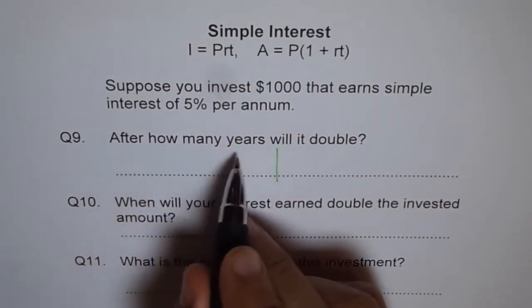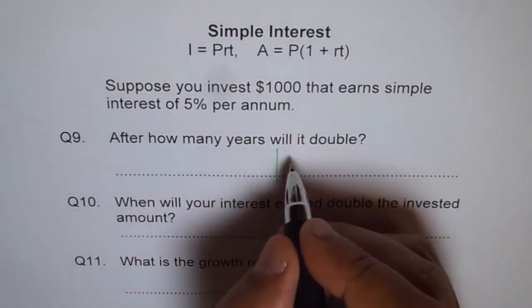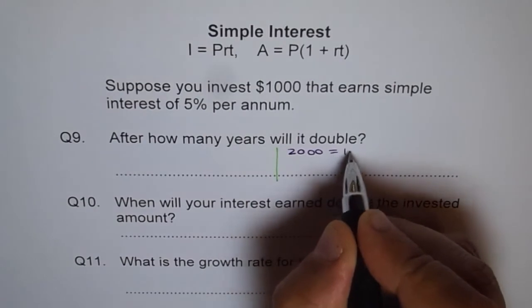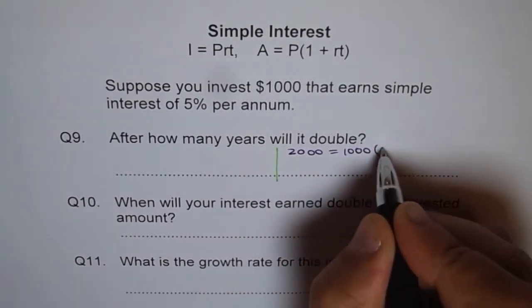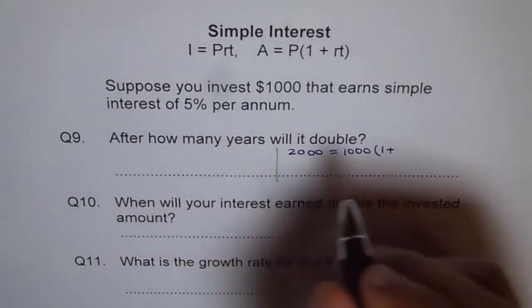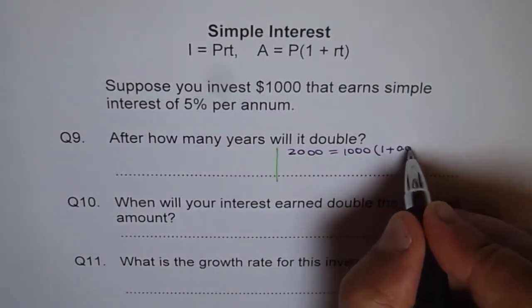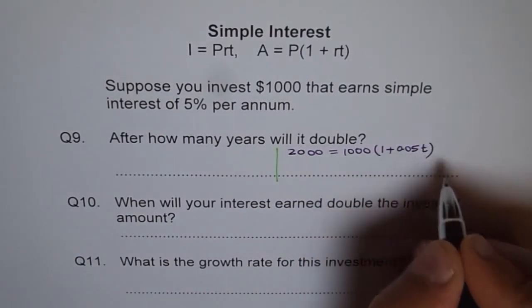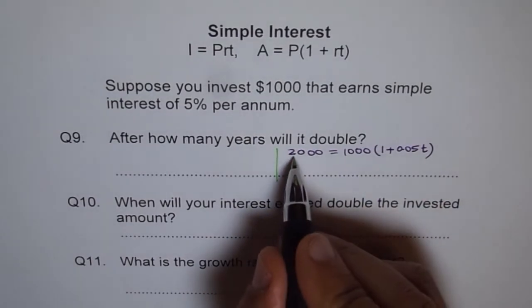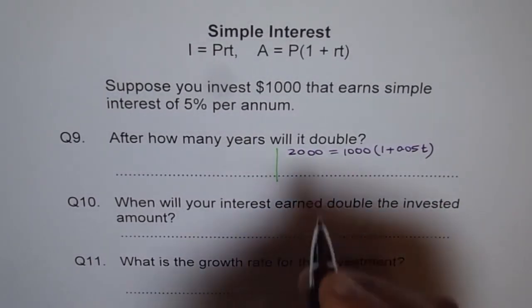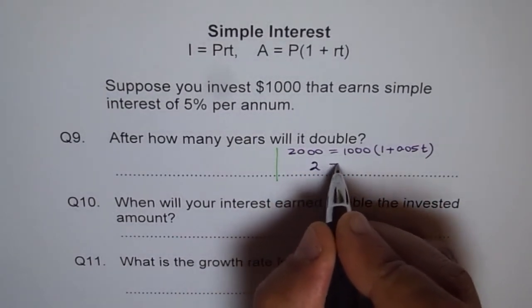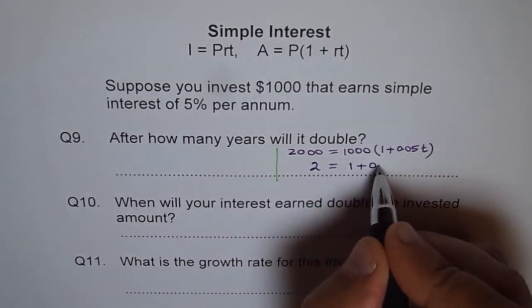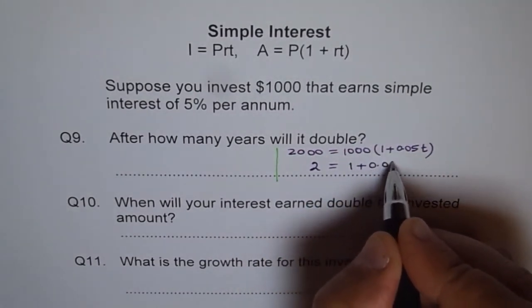After how many years will it double? That means it becomes two thousand. So we say two thousand equals to one thousand times one plus rate of interest, which is 5% or 0.05, into time T. When you divide two thousand by one thousand you get two, so you get two equals to one plus 0.05T.